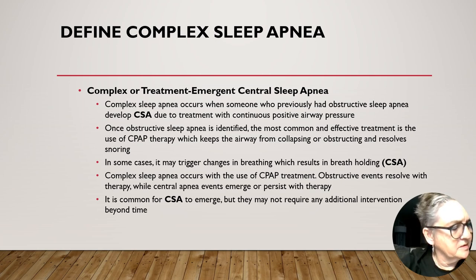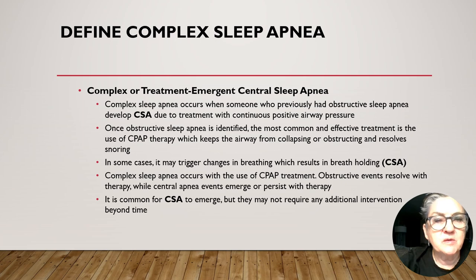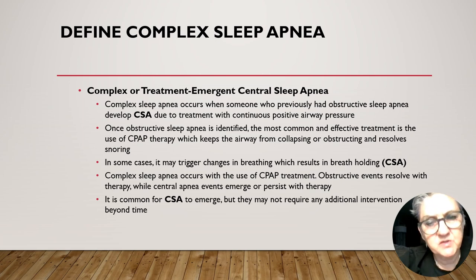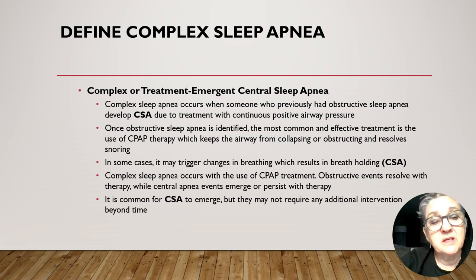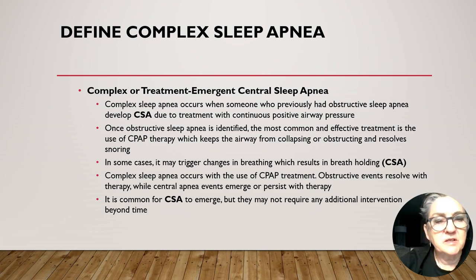Objective six: define complex sleep apnea. Complex or treatment-emergent central sleep apnea occurs when someone who has previously had obstructive sleep apnea develops central sleep apnea due to treatment with continuous positive airway pressure. Once OSA is identified, the most common treatment is CPAP therapy, which keeps the airway from collapsing. In some cases, CPAP may trigger changes in breathing resulting in central sleep apnea. Obstructive events resolve with therapy while central apnea events emerge or persist.